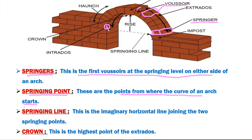The next definition is springing line. Springing line is the imaginary horizontal line joining the two springing points.